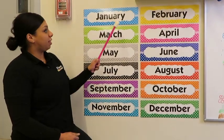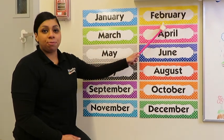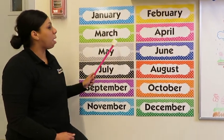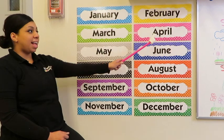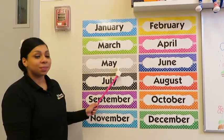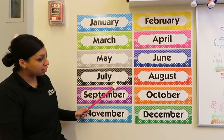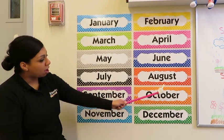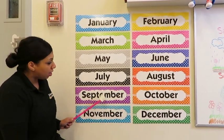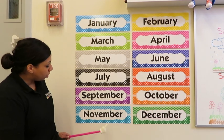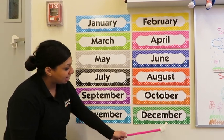So there's January, February, March, April, May, June, July, August, September, October, November, and December.